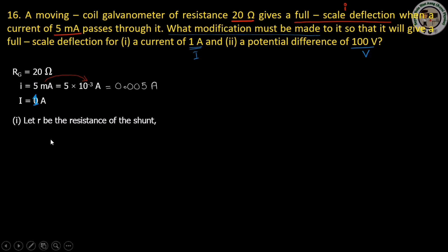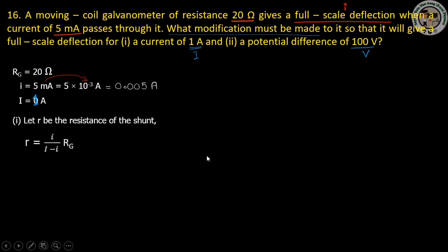The shunt resistor should have very low resistance. We have the formula: R_shunt equals I_g divided by (I minus I_g) multiplied by R_g.